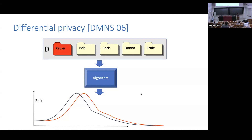Now imagine what happens if I were to change one person's data — say I changed Alice into being Javier — and plug this new database, which is the same except for one person's data, into the same randomized algorithm. I get out a slightly different PDF curve of the outputs instantiated on this new, slightly different dataset. Our privacy guarantee requires that if I look at these two curves, they should have a pointwise bounded ratio everywhere along the x-axis.